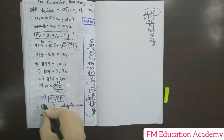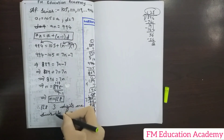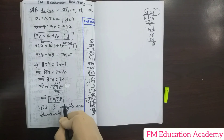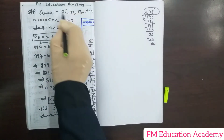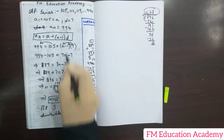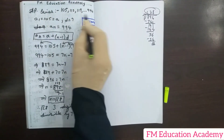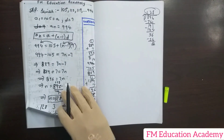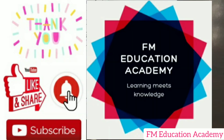The answer is that there are 128 three-digit numbers which are divisible by 7. Hope you have understood this video. If you did, please hit the like button, share this video with your friends, and subscribe to the channel if you haven't. Thank you very much for watching. Stay blessed.